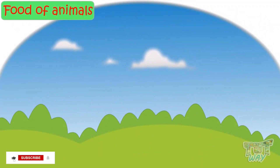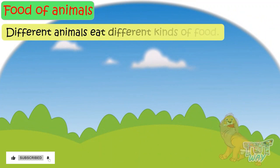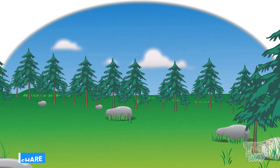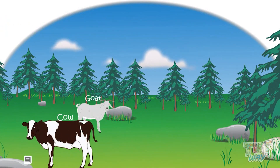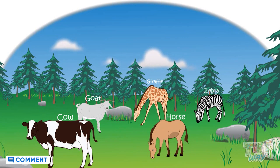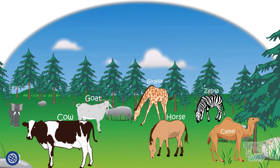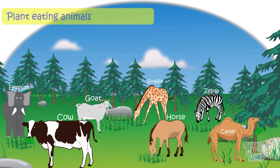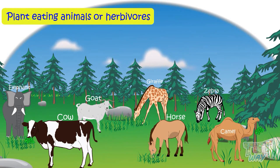Different animals eat different kinds of food. Animals like cows, goats, horses, giraffes, zebras, camels, and elephants eat grass, leaves, and other parts of green plants. These animals are called plant-eating animals, and they are also called herbivores.